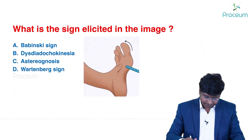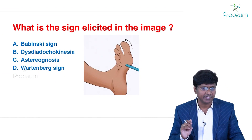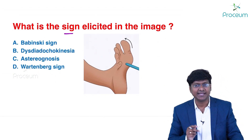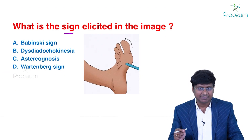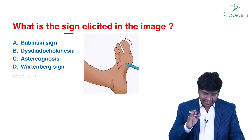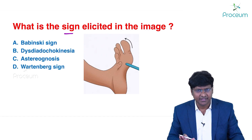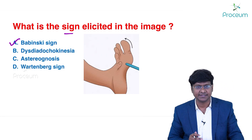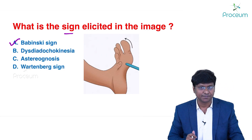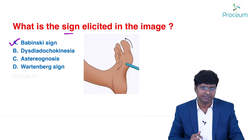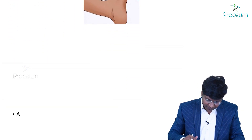The next image question asks: what sign is being elicited? Options are Babinski sign, dysdiadochokinesia, astereognosis, and Wartenberg sign. The answer is the Babinski sign. Let's do a quick recap of the Babinski and the other signs.